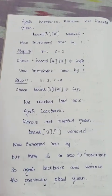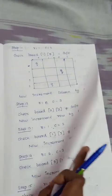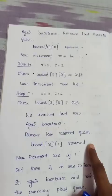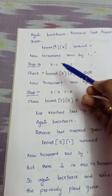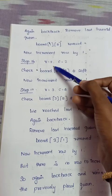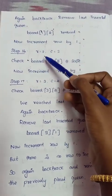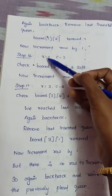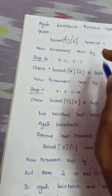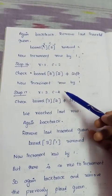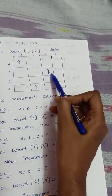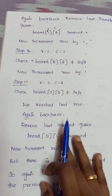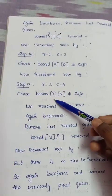We backtrack and remove the last inserted queen. That queen was at board[1][2]. We remove it, then increment the row to try board[2][2]. If all rows are exhausted, we reset and increment the column again.